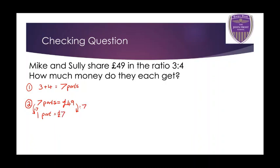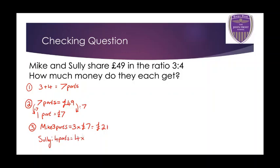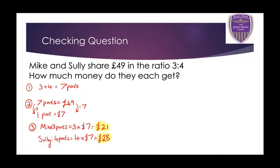Final step: how much do they each get? Mike gets 3 parts, so 3 times 7 pounds is 21 pounds. Sully gets 4 parts, so 4 times 7 pounds is 28 pounds. Double check: does 21 and 28 add up to 49, our original amount? Yes it does. So Mike gets 21 pounds and Sully gets 28 pounds. Thanks for watching and I'll see you next time. Bye!